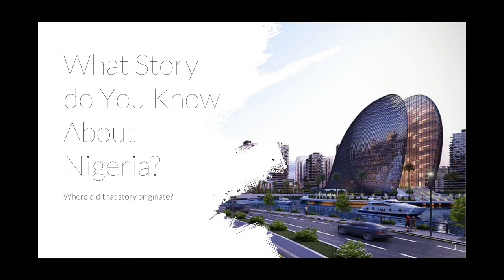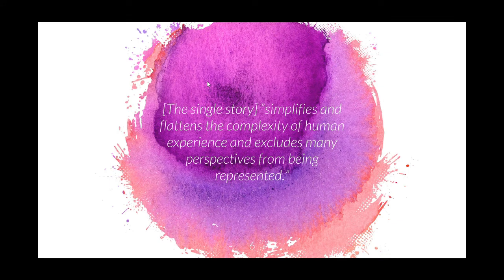Reflect for a second on the story you know about Adichie's home country of Nigeria. Does it include poverty, conflict, famine, violence? That's one story that's been disseminated by one power structure. But the problem with that is that it simplifies and flattens the complexity of human experience and excludes many perspectives from being represented. Those things might be the realities for some people, much like poverty, hunger, violence, and conflict are the realities for some Americans. But Adichie warns us against the power of the single story as a way of understanding a group of people.